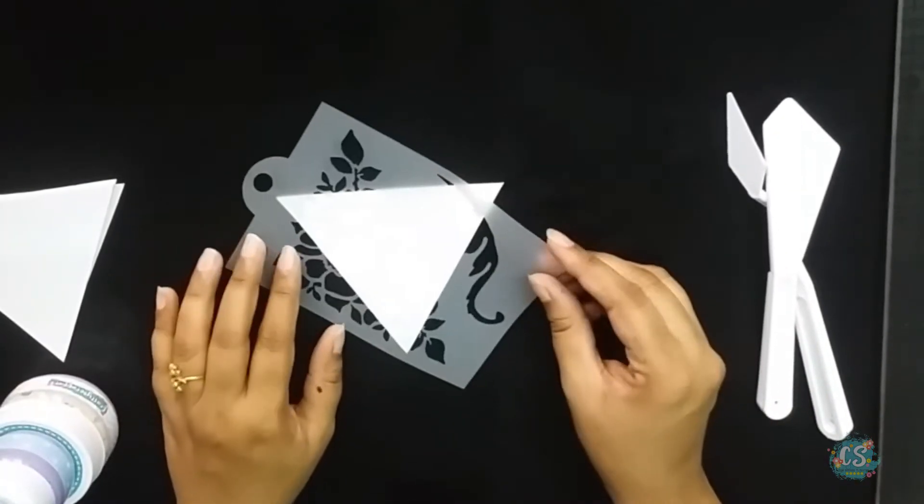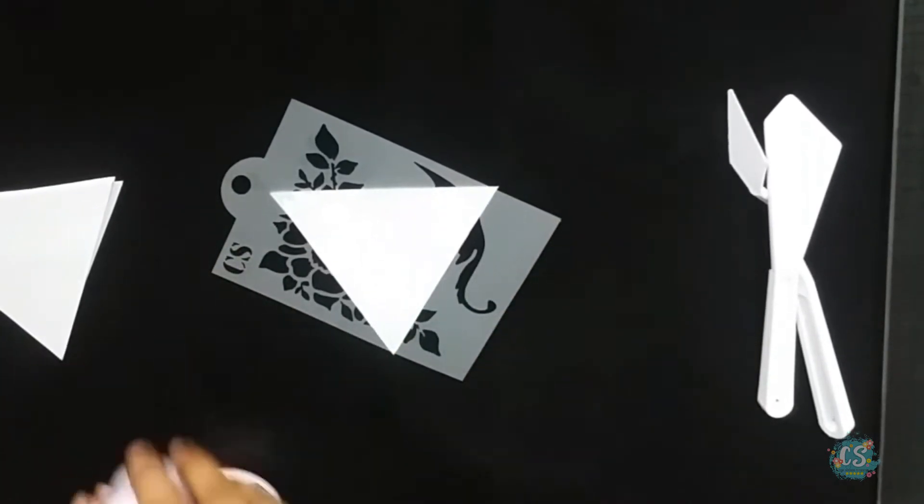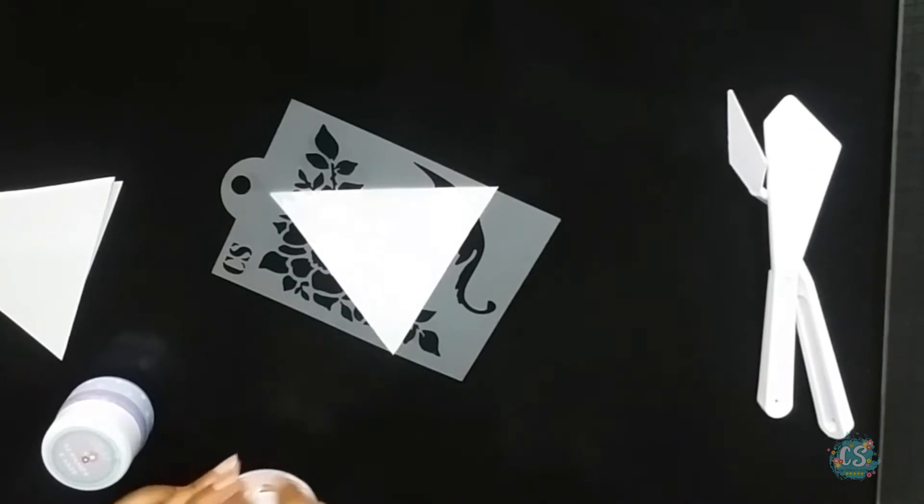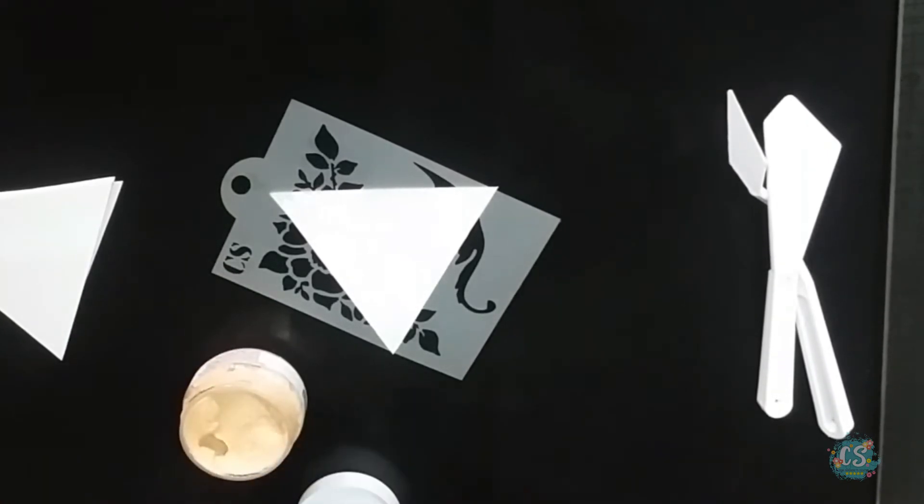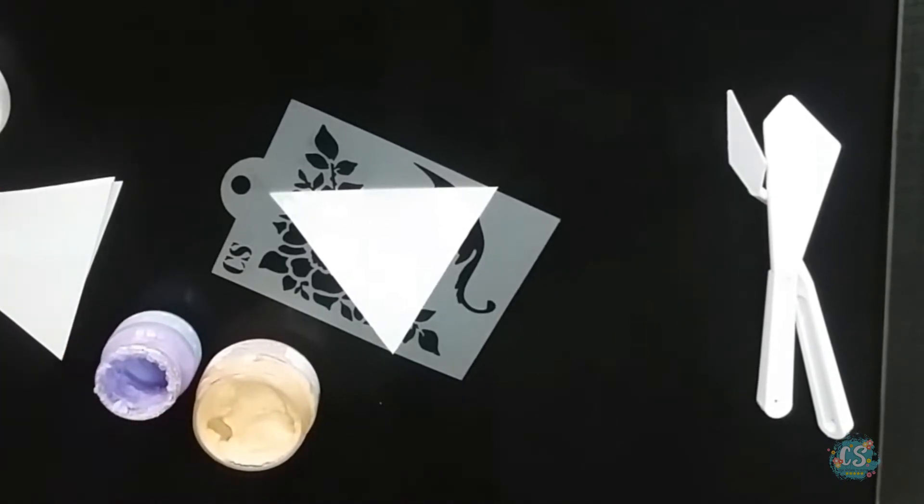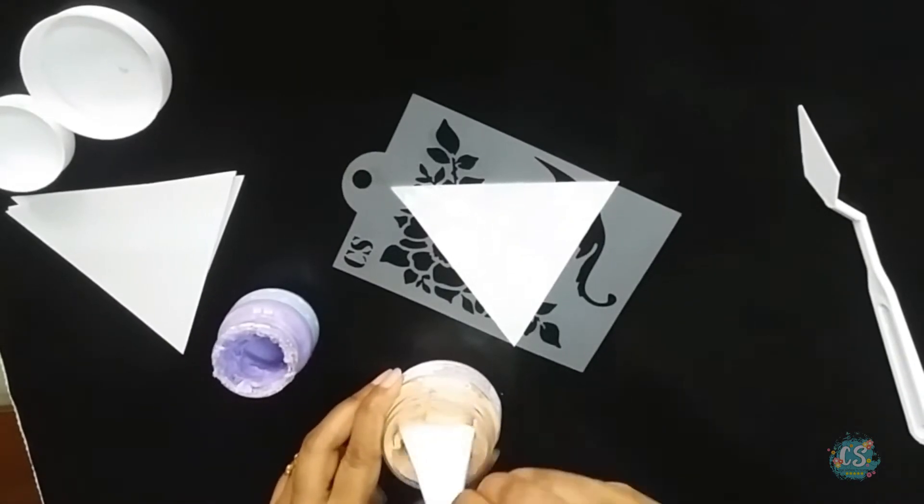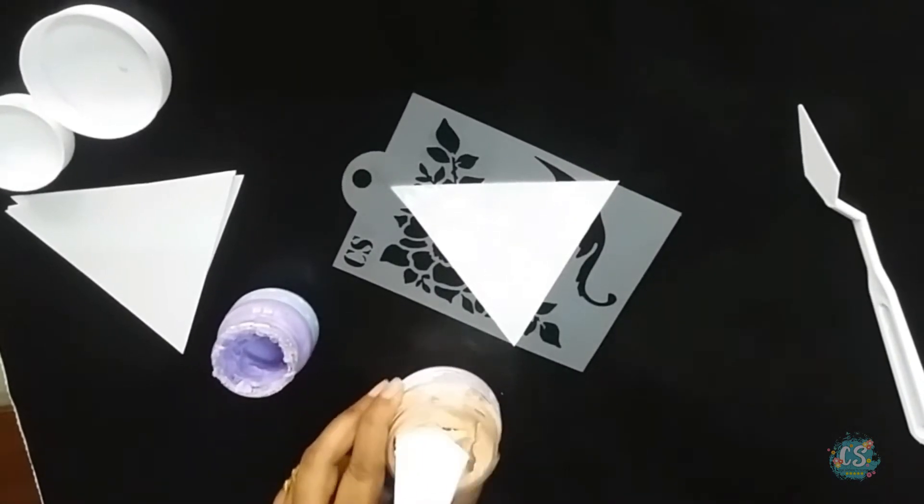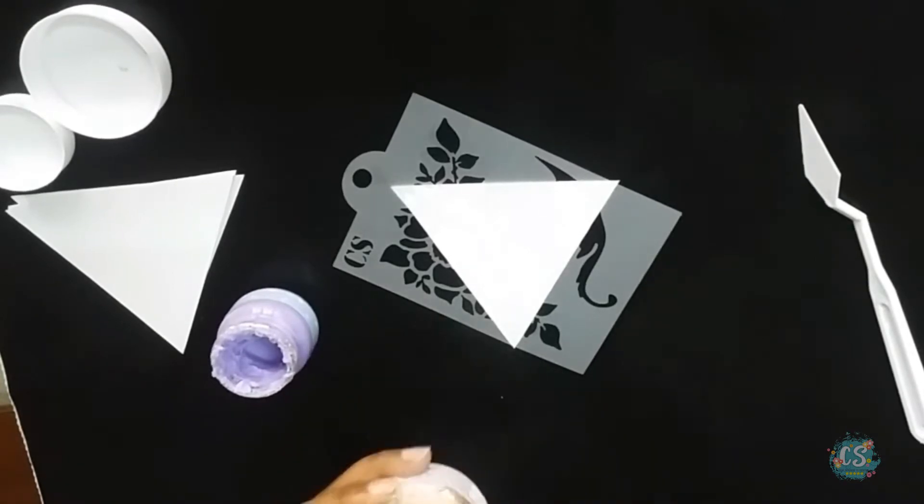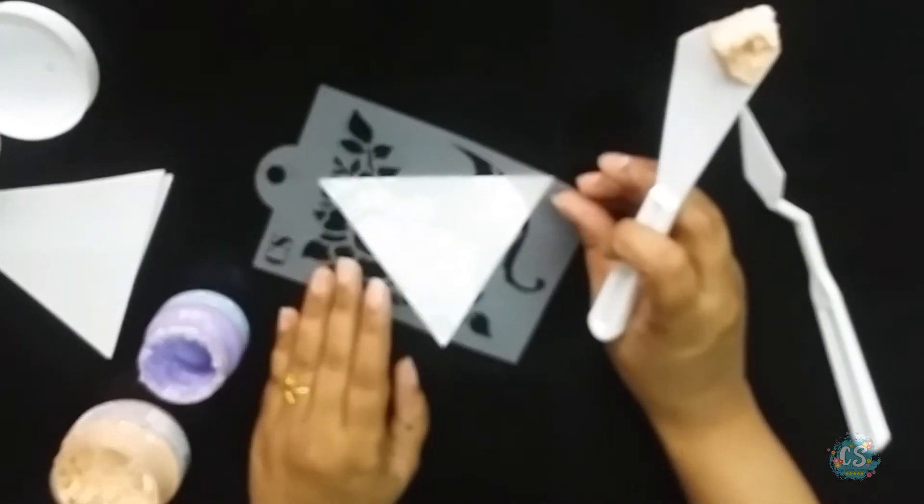I have taken this mini stencil. It's called flower vines. It's from crafty scrappers. Using some shimmer paste, I will be doing some stenciling. I have taken the colors blush and lilac to do my stenciling. The shimmer pastes are very beautiful. They give you such beautiful texture. I will be doing the same stenciling on all the five triangles that I have cut down.